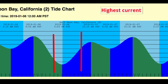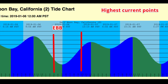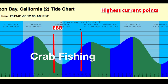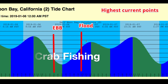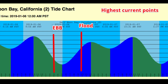Those are the highest points of current, so you don't want to go crab snaring at those points — it's just going to be moving everything around, even if you have 8 ounces on it. Definitely don't go fishing at those points either. If you have something on the bottom, it's just going to be moving everywhere. At those ebb and flood peak points, don't go crabbing — it's just not worth it.